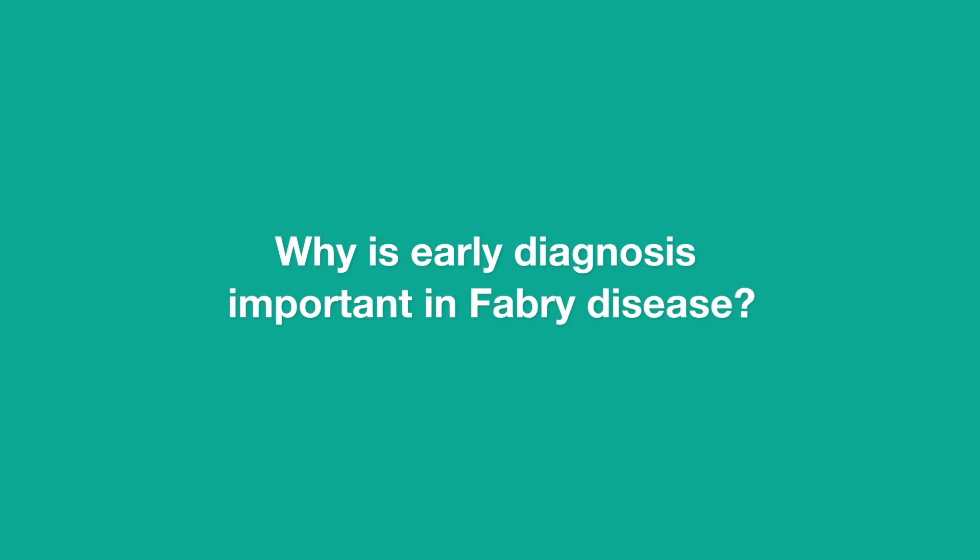If pedigree analysis has been undertaken, that can allow us to identify somebody at a younger age. Fabry disease can affect lots of different organs and cause damage to them. We have effective interventions, but these need to be applied before the organs are damaged. Pedigree analysis allows us to identify patients who are at risk of developing complications and intervene before those complications have occurred.